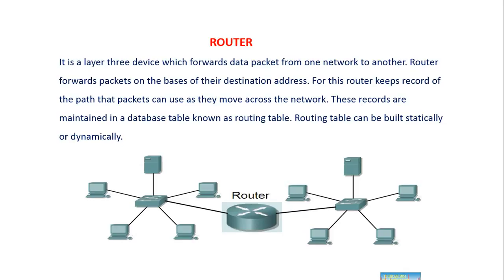A router is a layer 3 device that's used to forward data from one network to another network. The data is forwarded based on the destination address. For this, the router maintains a database table known as a routing table, which contains the entire paths for the data to be transmitted or forwarded. The routing table can be built statically or dynamically, which we'll discuss in later sessions.